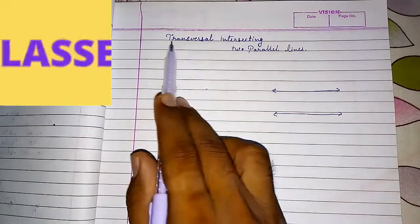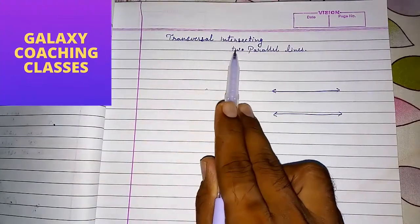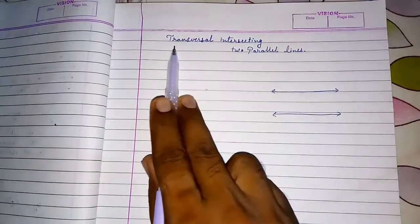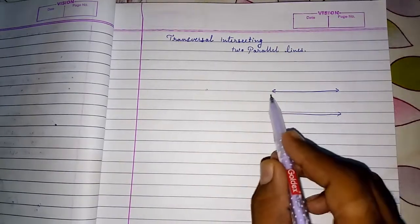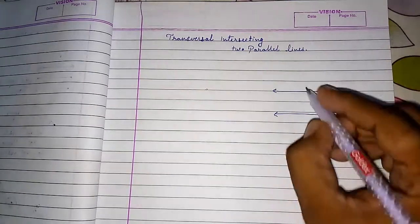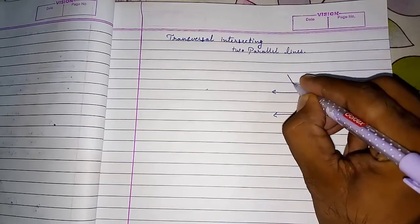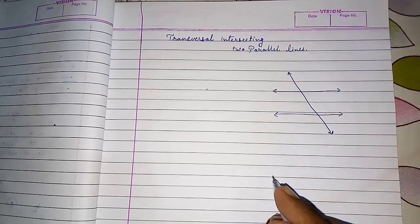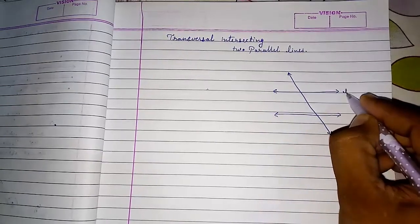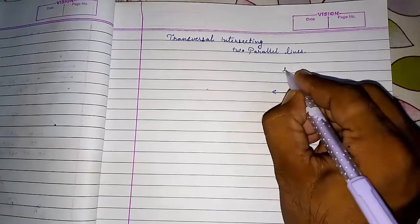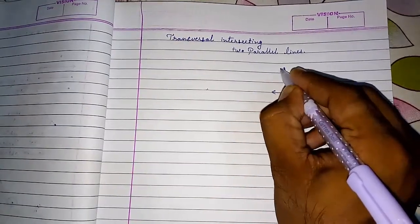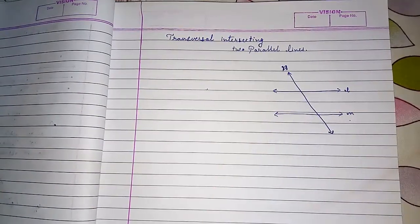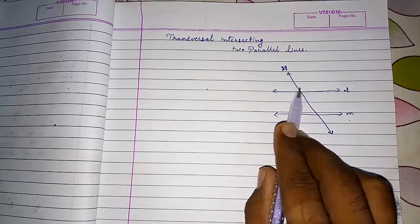Hello friends, today we are going to study about a transversal intersecting two parallel lines. Different angles will form when a transversal intersects two parallel lines. Look here — two parallel lines L and M are there, and N is a transversal intersecting L and M.